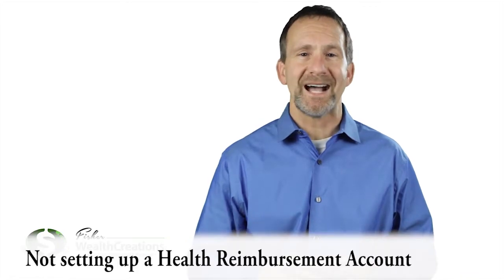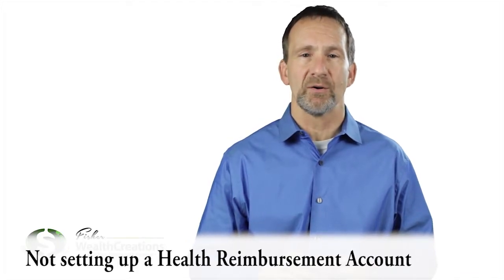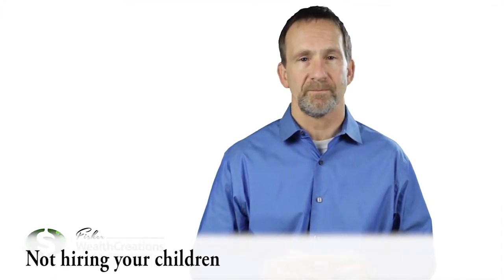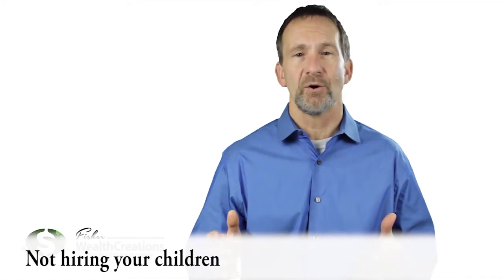Number four, not setting up a health reimbursement account or proper health plan to maximize your write-offs. Number five, not employing your children. You can shelter over $6,000 per child potentially tax-free and then use it to fund a Roth IRA for college savings. I always say, let Uncle Sam pay for your kid's education.